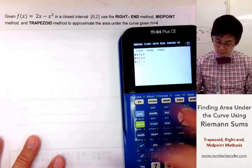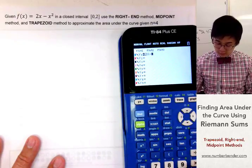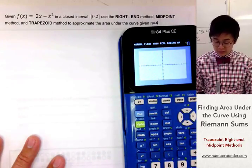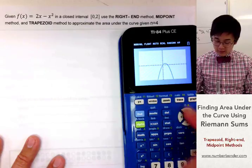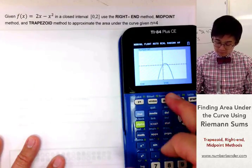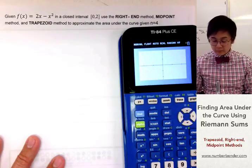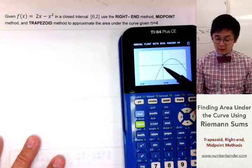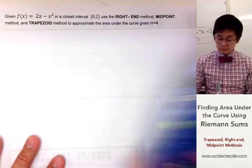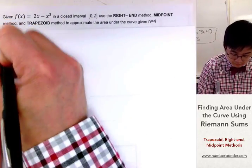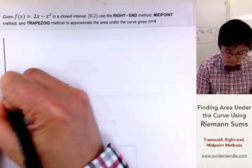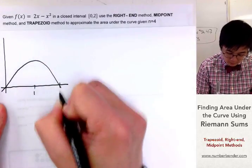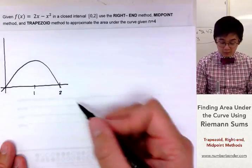First, plug in the function at y₁, which is 2x minus x², so we can see the graph — a parabola going downwards. By zooming in we'll be able to see the graph better. We're going to work on the interval from 0 to 2. This is now our graph of f(x).